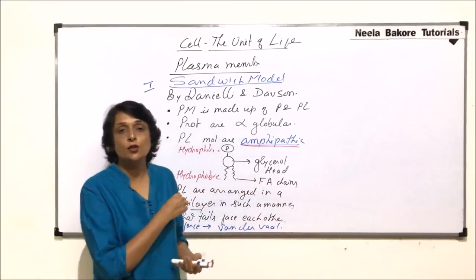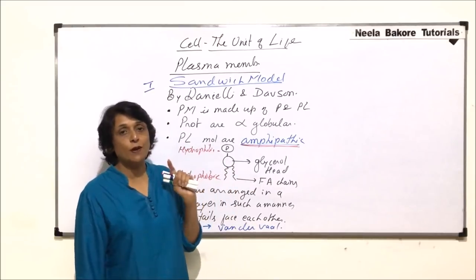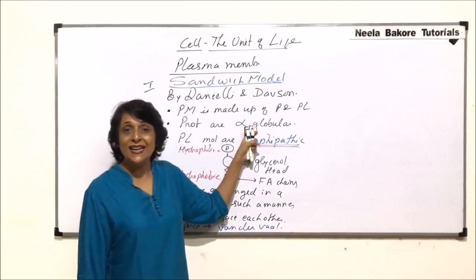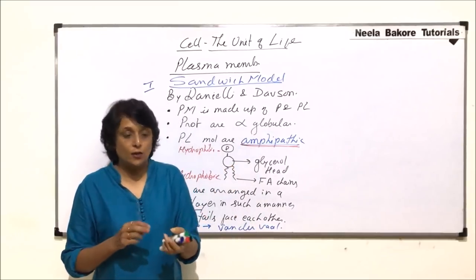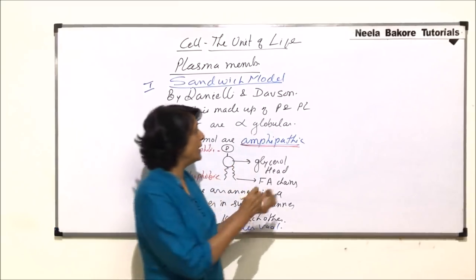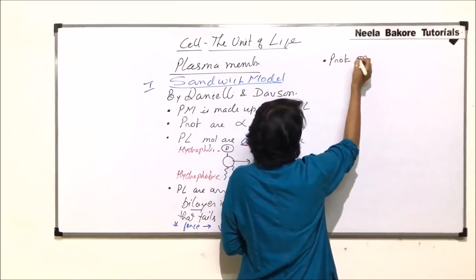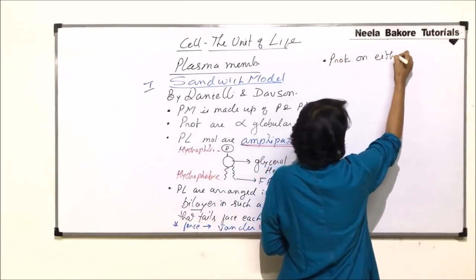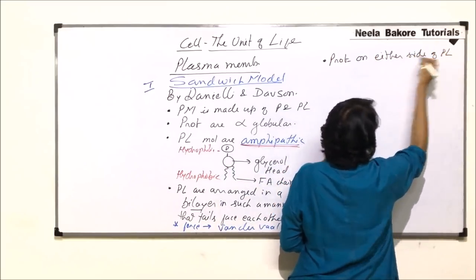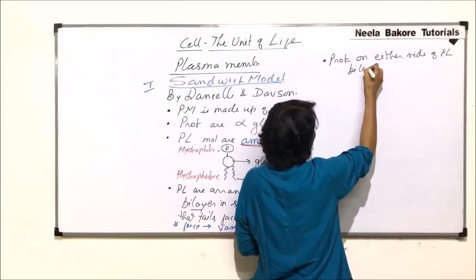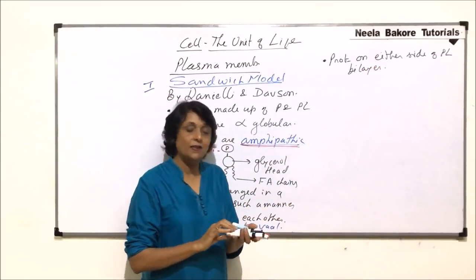Using this information we are going to draw the diagram, but before that, one more point: the alpha globular proteins are arranged on either side of the phospholipid bilayer. Now with this information, let us make the diagram.